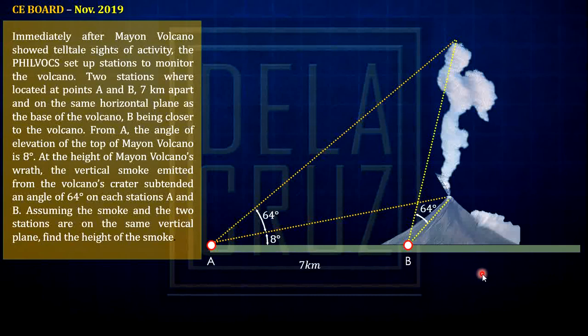Take note, this is not a scale drawing. It is not scaled, so it won't matter in our answer. Assuming the smoke and the two stations are on the same vertical plane, find the height of the smoke. So this is the interpretation of the problem. We don't need this anymore.